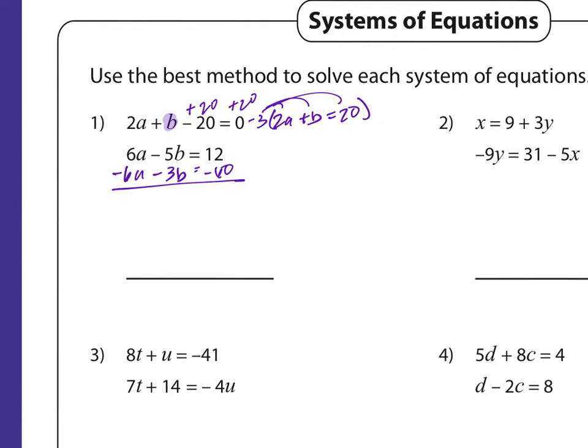Please make sure you ask questions if you have any. Then we just add the equations together: 6a minus 6a is 0, and negative 5b minus 3b is negative 8b. Negative 60 plus 12 minus 60 is negative 48. Divide by negative 8, and b equals 6.